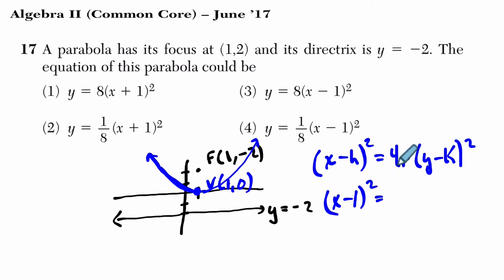p is the distance between the vertex and focus, or the distance between the vertex and the directrix. In this case, the parabola is facing upward, so p is positive. And you can tell by looking at the absolute value of the distance.